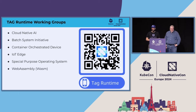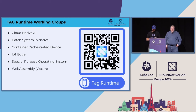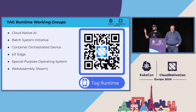We're both co-chairs of various working groups that are part of this. The TAG Runtime group is made up of a bunch of different projects that are constantly ongoing all around the runtime space. The main groups listed are cloud native AI, batch system initiatives, container orchestrated devices, IoT Edge, special purpose operating systems, and WebAssembly. There's a QR code that leads to that list and a link to all the relevant information about the different working groups.